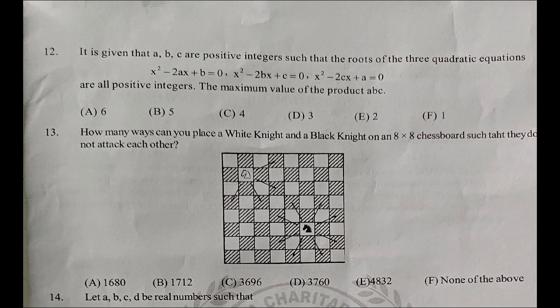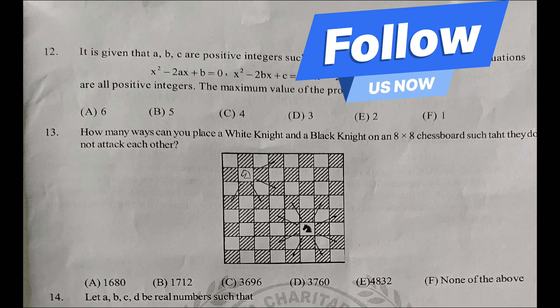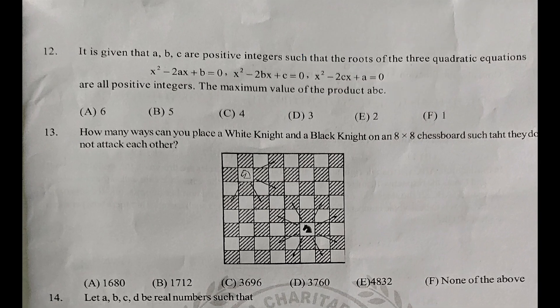It is given that A, B, C are positive integers such that the roots of the three equations are all positive integers. Find the maximum value of the product A, B, C. The answer is F1, 3.